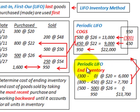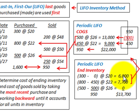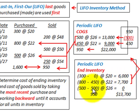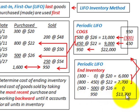For our ending inventory with periodic LIFO: the oldest 300 units — we didn't use any of those, so at $20 a piece that's $6,000 in ending inventory. For the 800 units purchased, we used 450, leaving 350 remaining at $22 a piece — that equals $7,700. For the most recent 500 units purchased, we used all of those, so zero remains in ending inventory. Total ending inventory is $13,700.